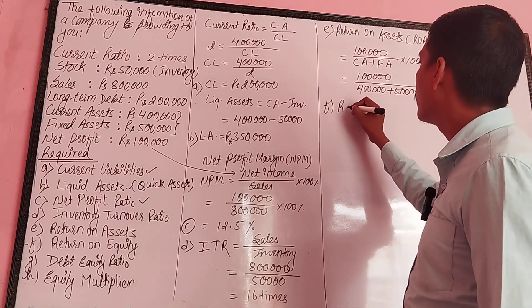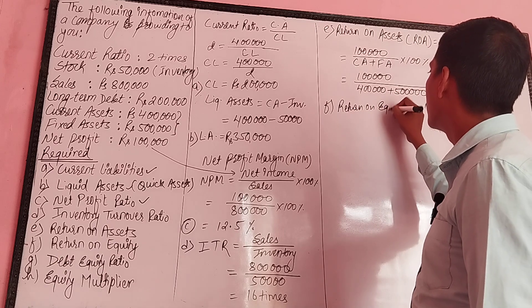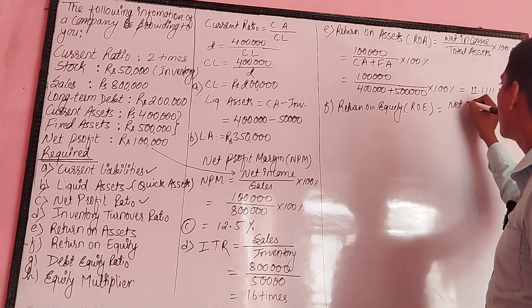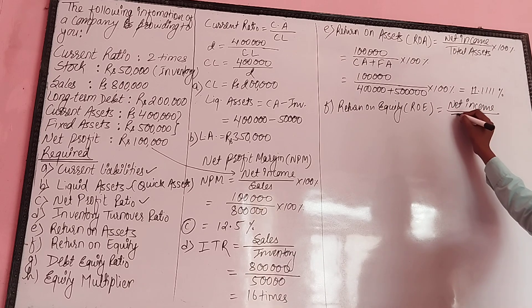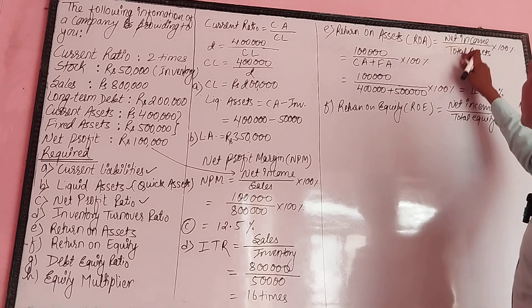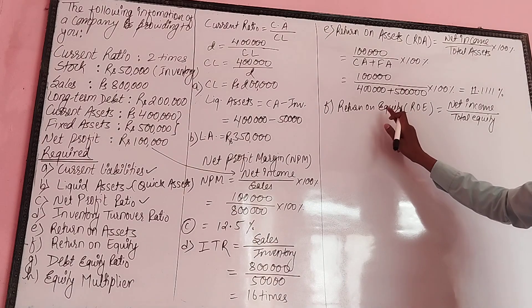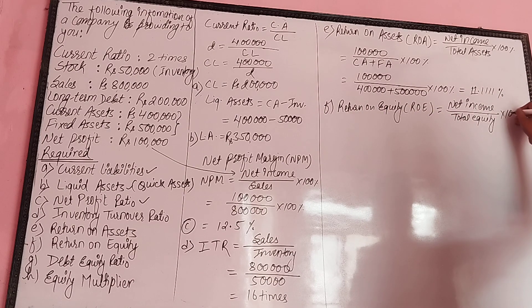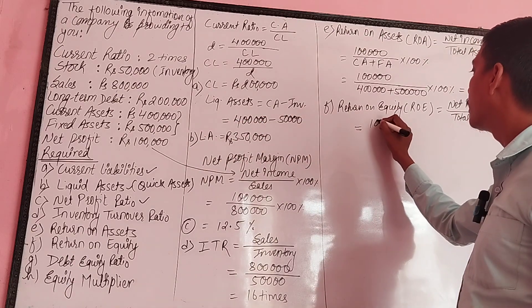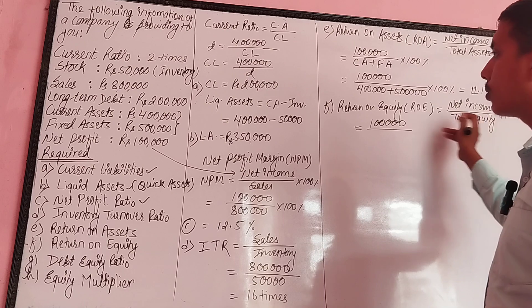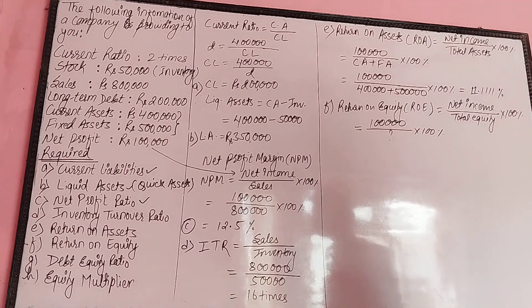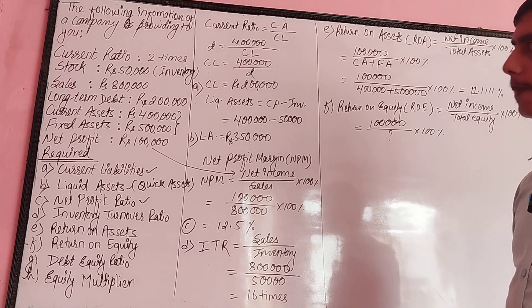Return on Equity (ROE). Formula: net income divided by total equity, into 100%. Net income is 1 lakh. Total equity — how much is the total equity?